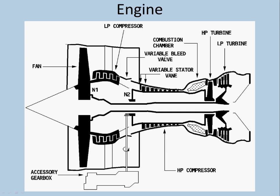The Variable Bleed Valve (VBV) is upstream of the HP compressor. Its setting depends on the compressor inlet temperature. It will be fully open during engine start, low thrust, or fast deceleration — when the engine requires more bleed. It will be fully closed in high thrust positions, because at high thrust you do not need additional bleed.